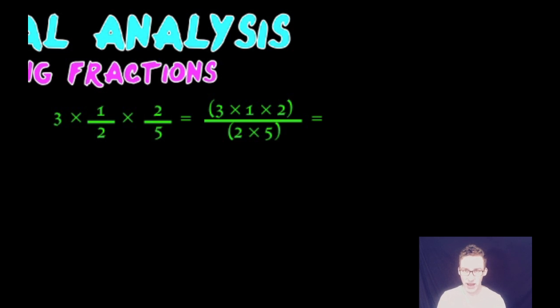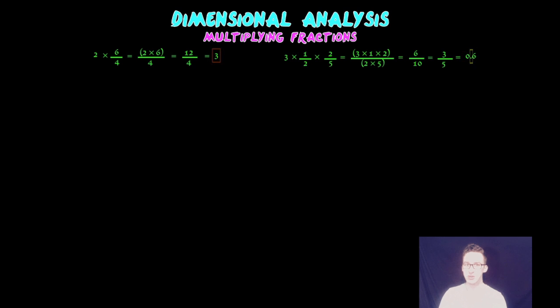So in our numerator, we have three times one times two over two times five. That simplifies to six over 10, which further simplifies to three over five, or in decimal format will become 0.6. So some pretty simplistic calculations there that you probably remember from your elementary school days.